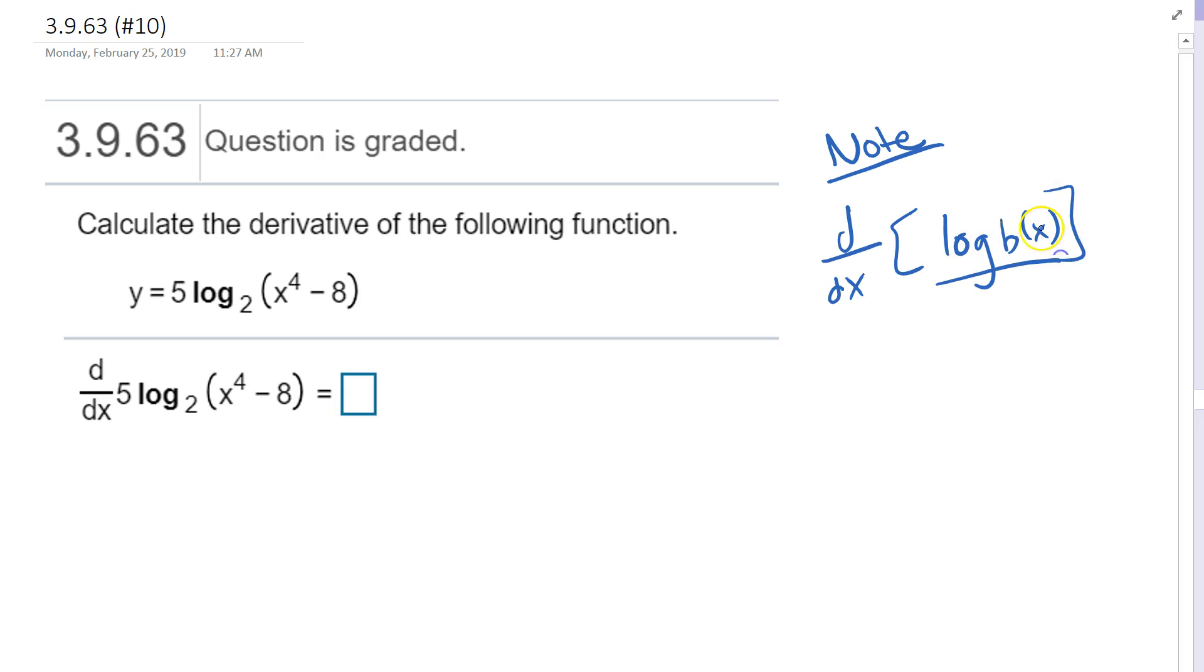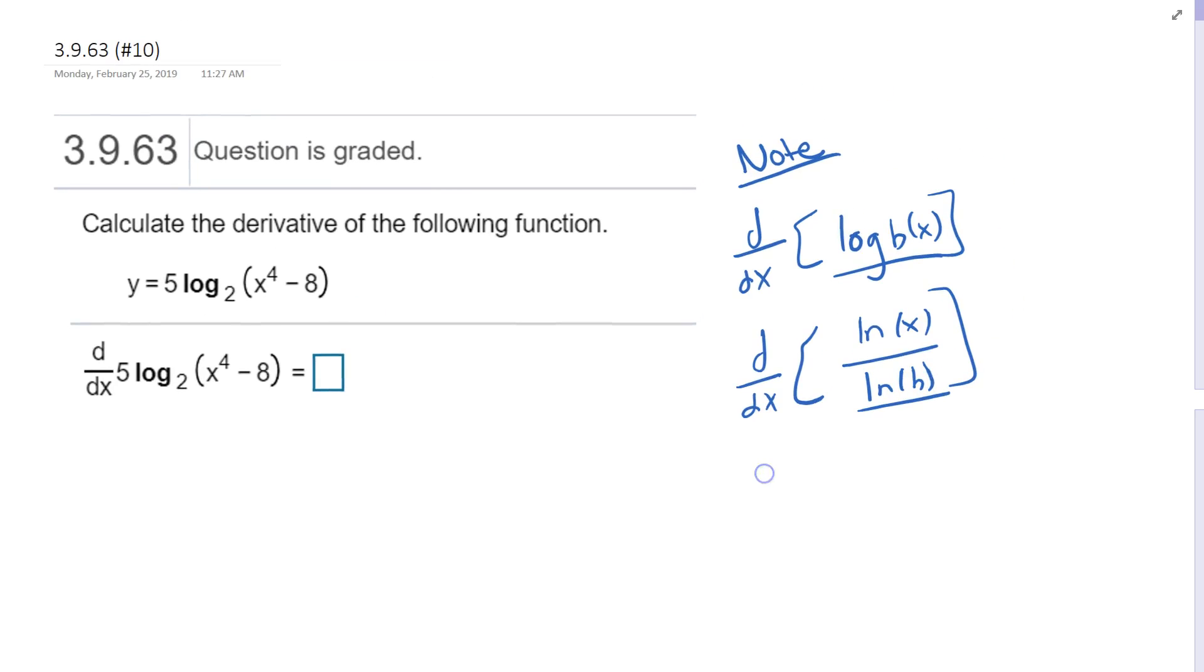we can take the derivative with respect to x of log base b of x, and really what we're doing is using the change of base formula to write this as ln of x over ln of b, where ln of b is just a constant, it's not a variable here.